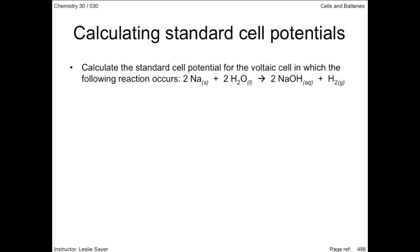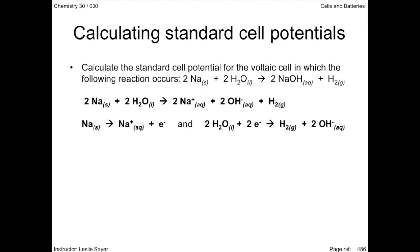To help us identify the two half reactions of this redox reaction, write out the equation as a net ionic equation. You can use your data book to assist you here, pulling out a reduction half reaction and an oxidation half reaction. Sodium is seen to be losing electrons and so is oxidized and is thus the anode. Water looks to be gaining electrons — it's reduced and is thus the cathode.